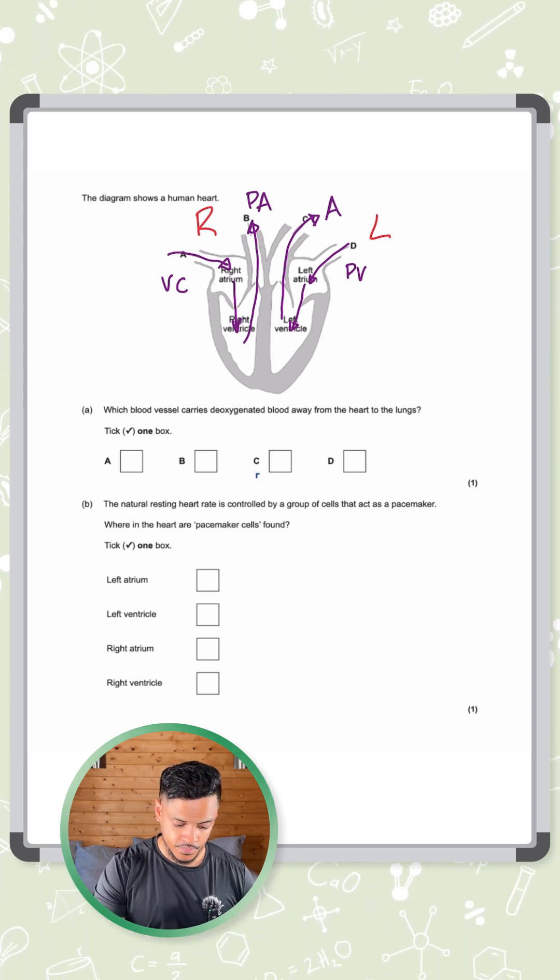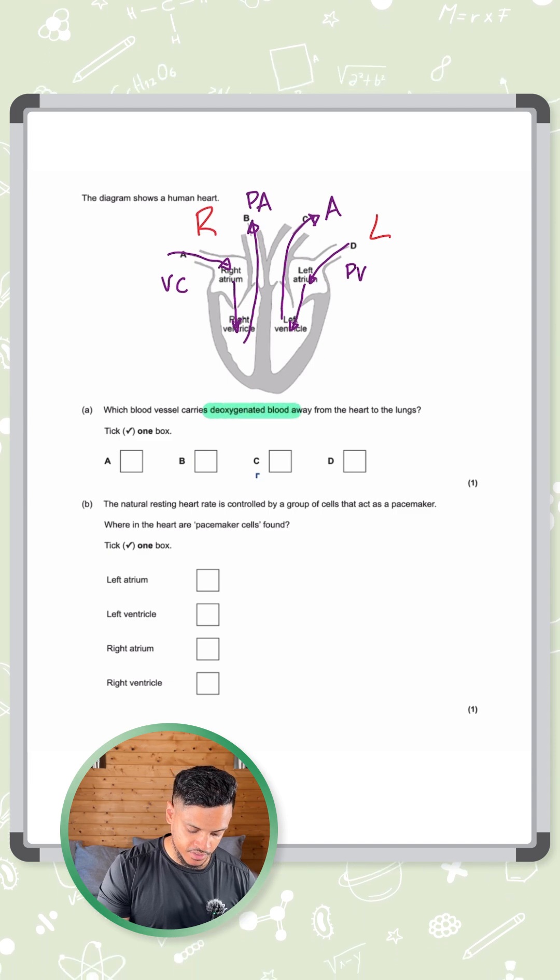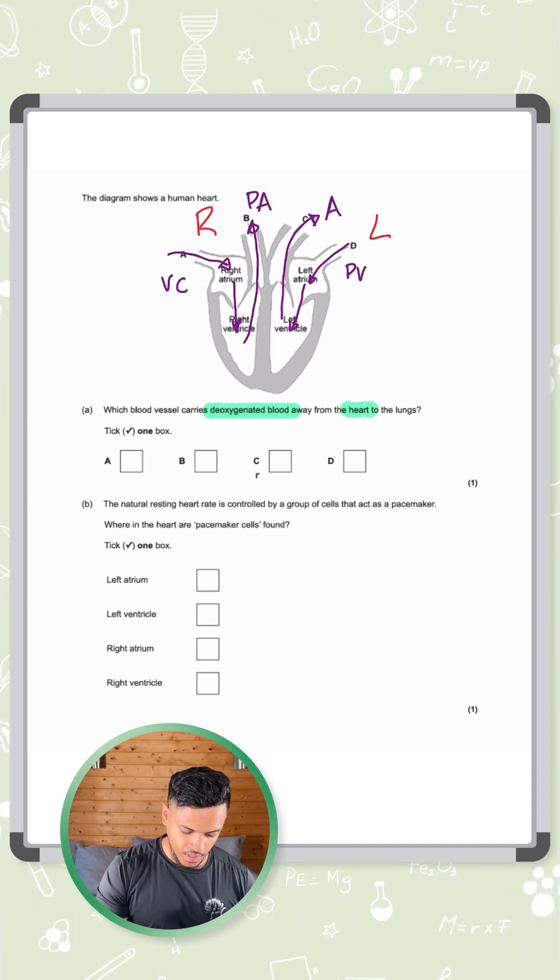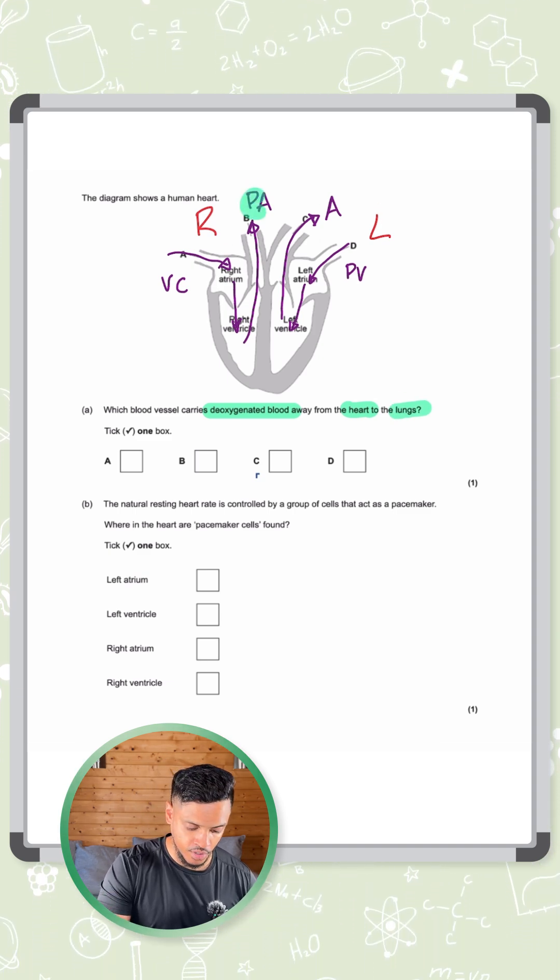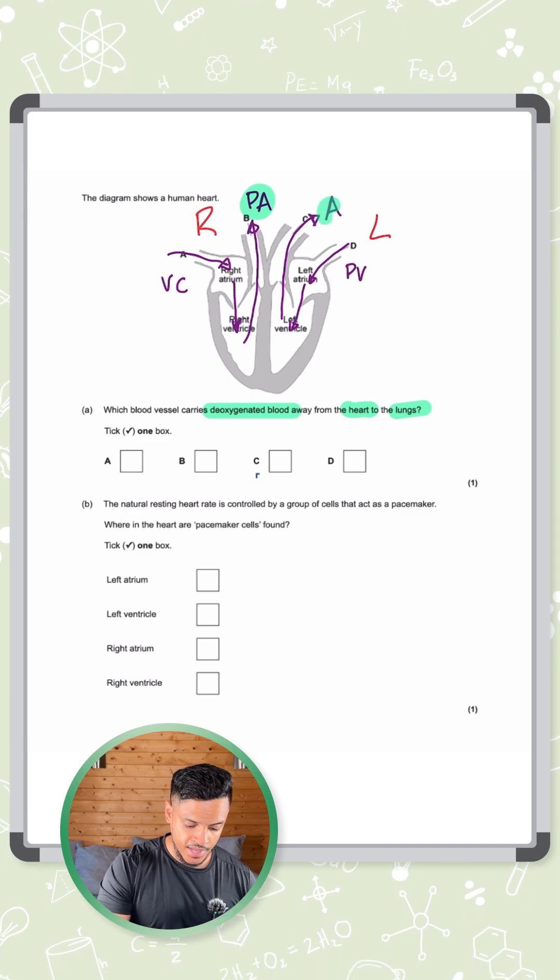Now what's the question asking? It's asking which blood vessel carries deoxygenated blood—that's blood without oxygen in it—away from the heart to the lungs. So away from the heart, that could either be the pulmonary artery, because the arrow is going away, or the aorta.